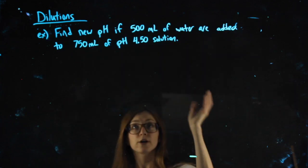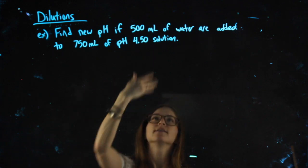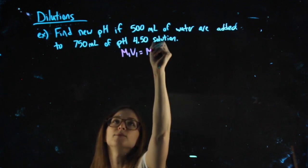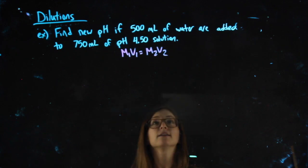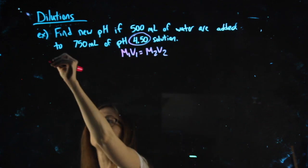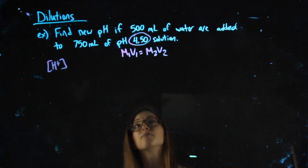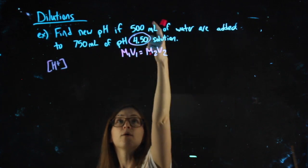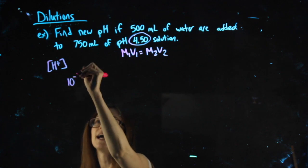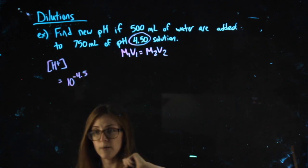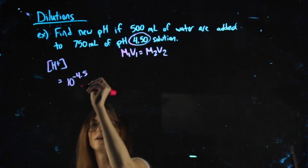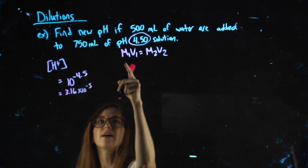Here we're finding a pH. Water is being added to a pH 4.5 solution. Since all I'm doing is adding water, I know it's a dilution and I can use M1V1 = M2V2. My molarity depends on whether I'm working with an acid or a base. pH less than 7 — I'm working with an acid, so my molarities need to be the molarity of H⁺. Before I dilute it, it has a pH of 4.5, so 10 to the negative pH gives me my H⁺: 10^(−4.5) = 3.16 × 10⁻⁵. That'll be my M1.